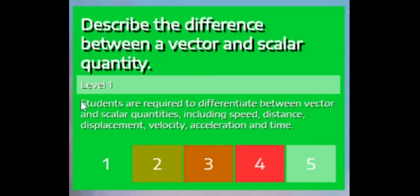And down here we have just a description. Students are required to differentiate between vector and scalar quantities, including speed, distance, displacement, velocity, acceleration, and time. Okay, so that's what you need to learn.